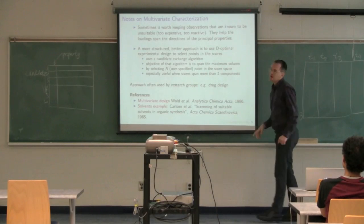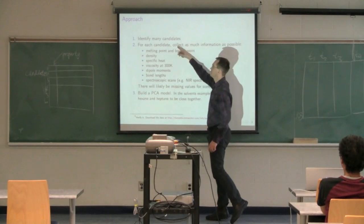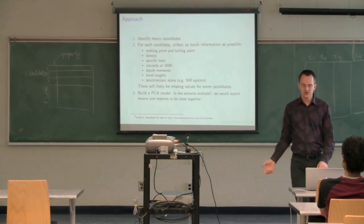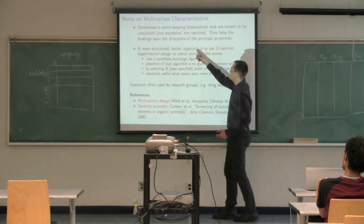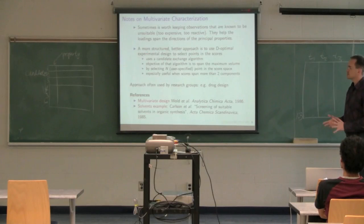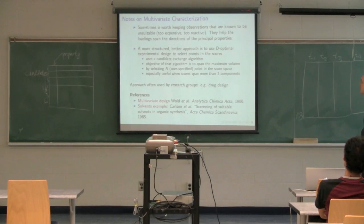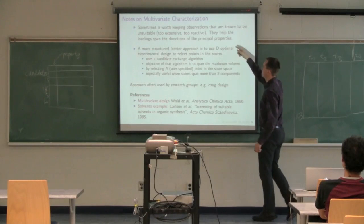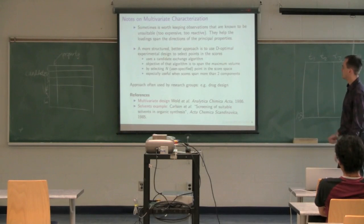One important note: when collecting your data, it's sometimes worth including observations you know won't be suitable—too expensive, too reactive, or hard to obtain. They help make the PCA matrix span the space more evenly and populate all directions. Don't prejudge results by eliminating observations early; keep them in so those PCA directions get added to the model. You can always use constraints to avoid selecting them later, but they help stabilize the PCA model.